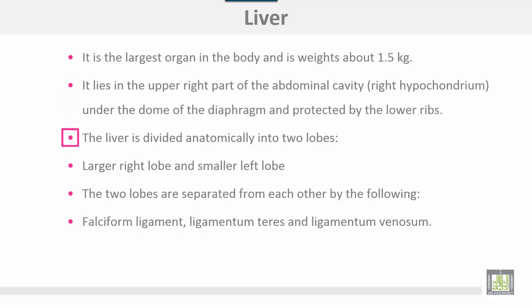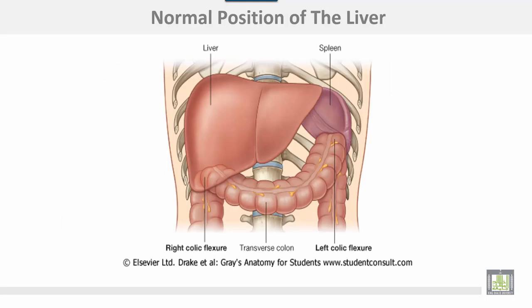The liver is divided anatomically into two lobes: the large right lobe and the small left lobe. The two lobes are separated from each other by the falciform ligament, ligamentum teres, and ligamentum venosum. The liver lies mainly in the right hypochondrium.